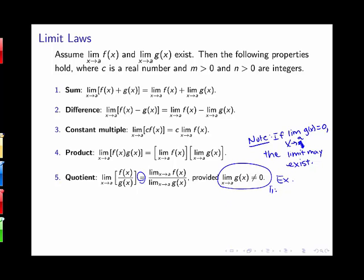For example, if we wanted to find the limit as x goes to zero of x squared over x, since the limit as x goes to zero of x would be zero, I couldn't rewrite this as the limit of x squared over the limit of x. Instead, I'd have to recognize that x squared over x can be simplified to x, and then compute this as having a value of zero. So we want to be careful when dealing with quotients.